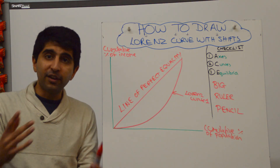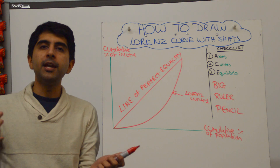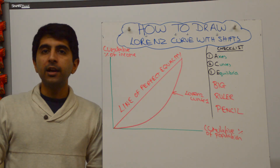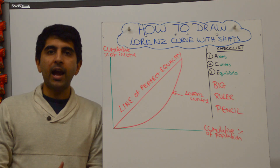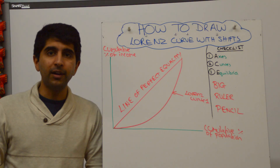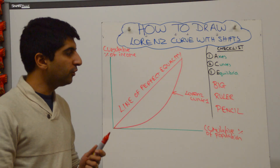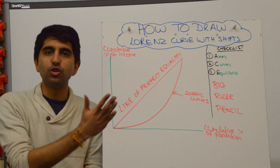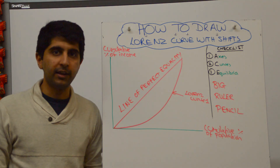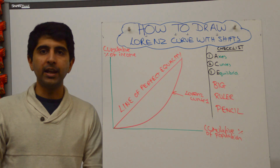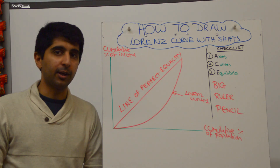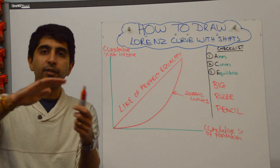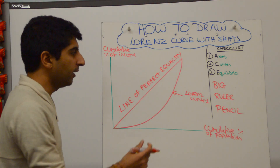Let's now say that you need to shift the curve. Maybe in your exam you need to show an economy whose income inequality has become smaller — less significant. How would you do that on this diagram? Well, you shift the Lorenz curve towards the line of perfect equality. A shift towards the line implies that there is less income inequality. A shift away from the line of perfect equality implies that there is more income inequality.